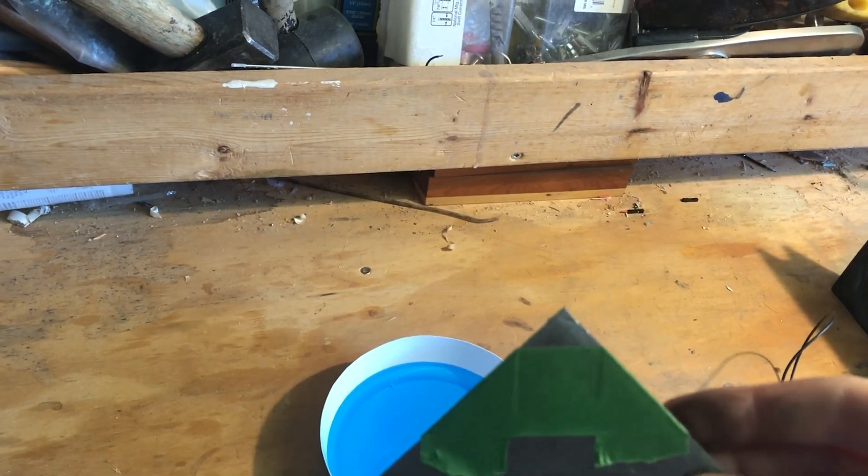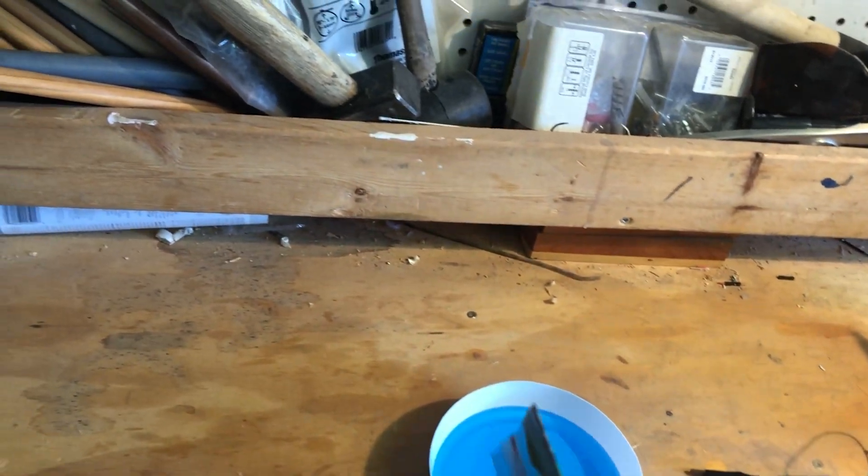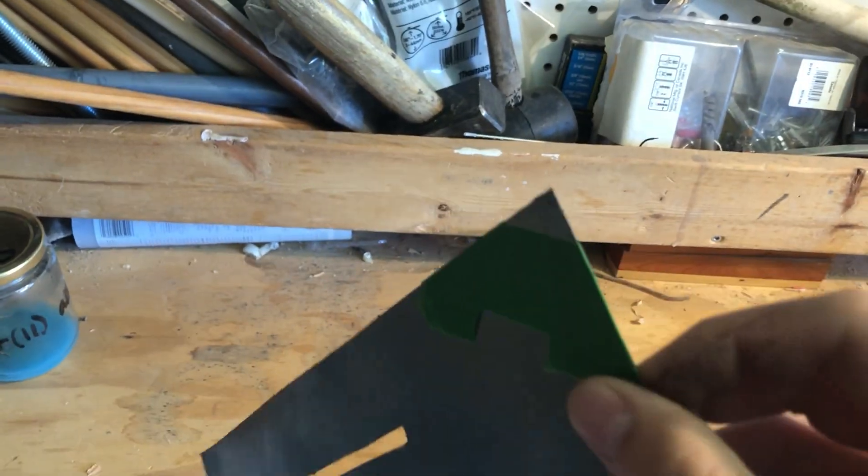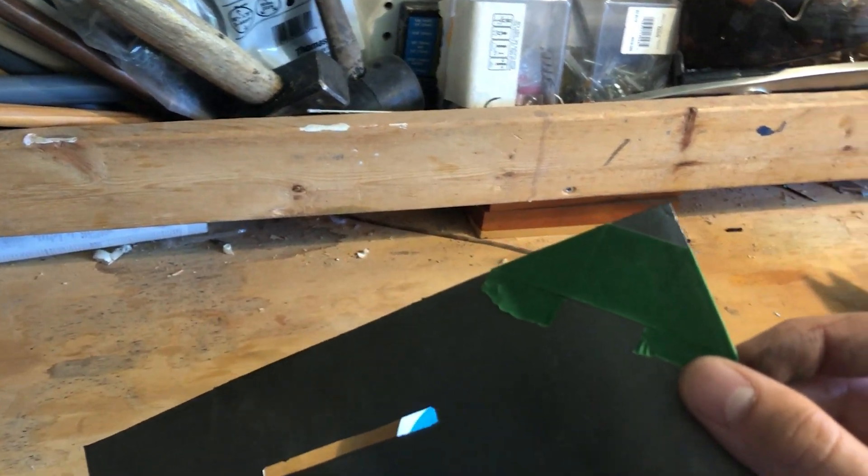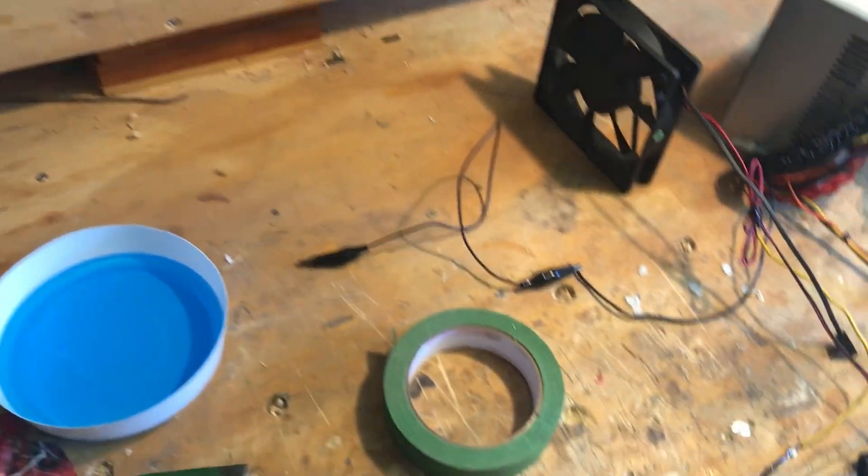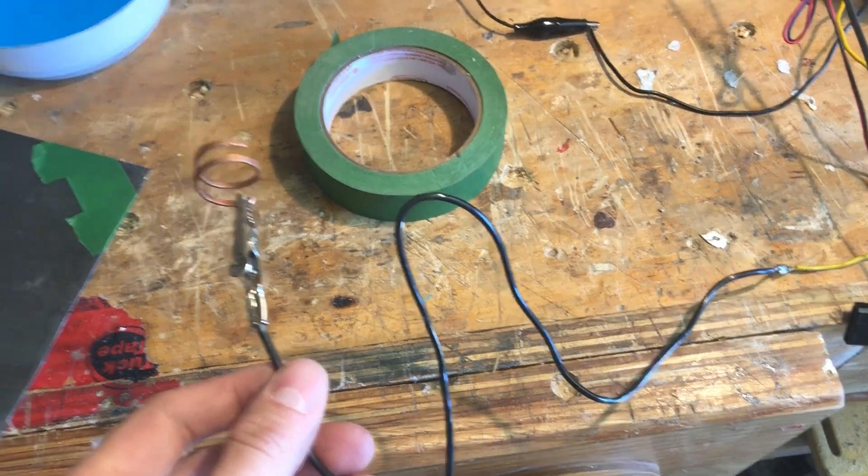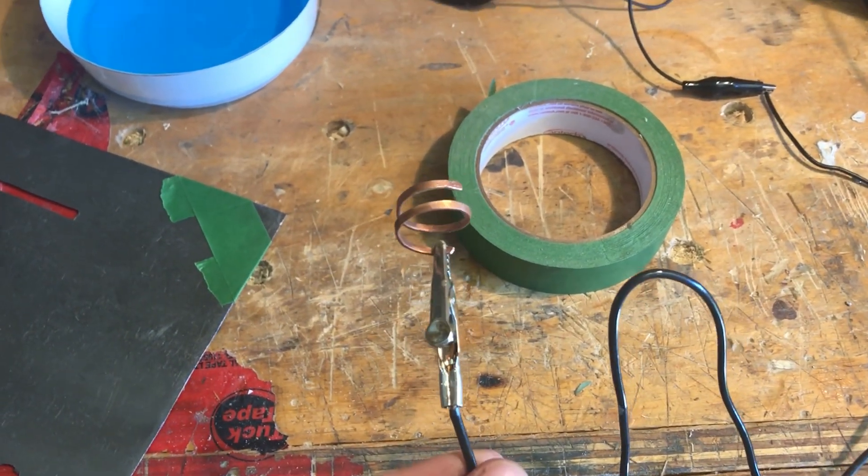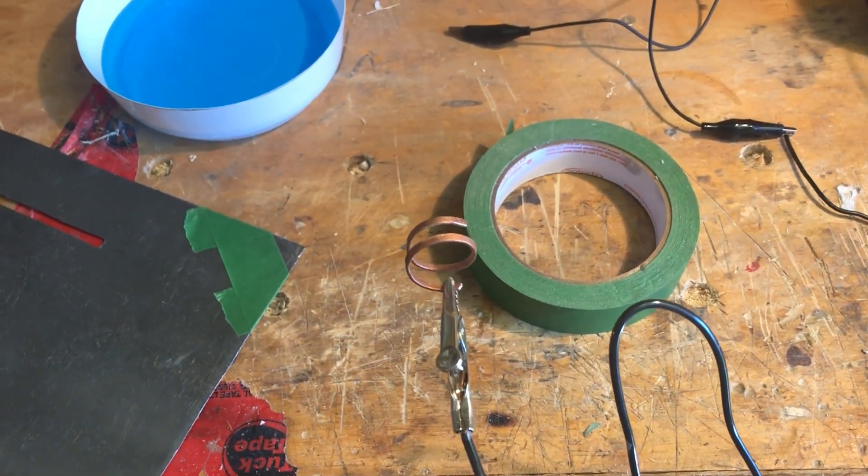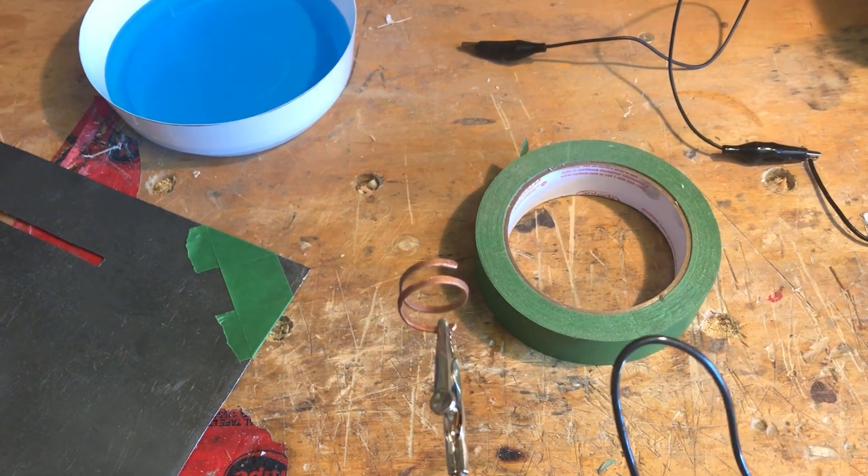When doing this, you want to be fairly delicate with the graphite foil, just because it's very breakable. After that's done, we're just going to connect the positive end of our cable, which is an alligator clip, to a piece of copper. This is just a sheet of wire that I hammered out and flattened into a ring, but it really can just be anything as long as it's copper.